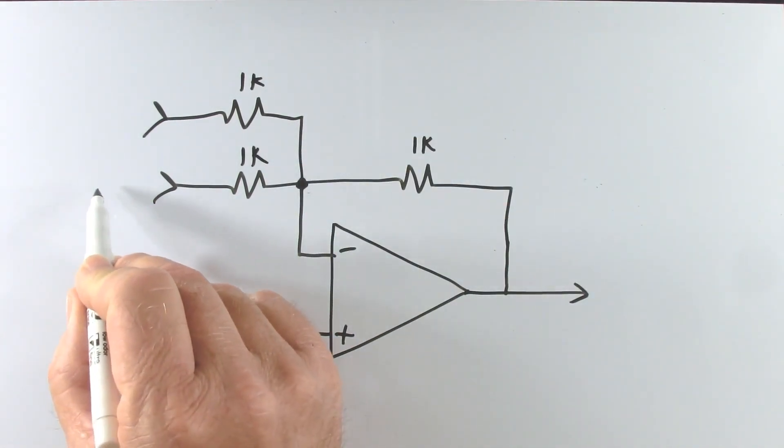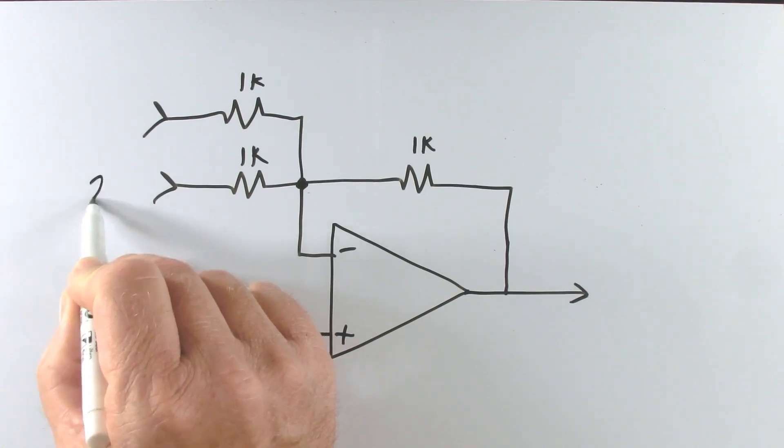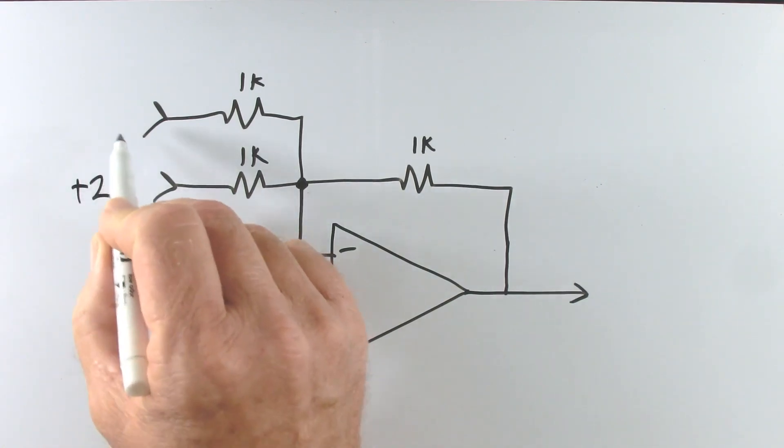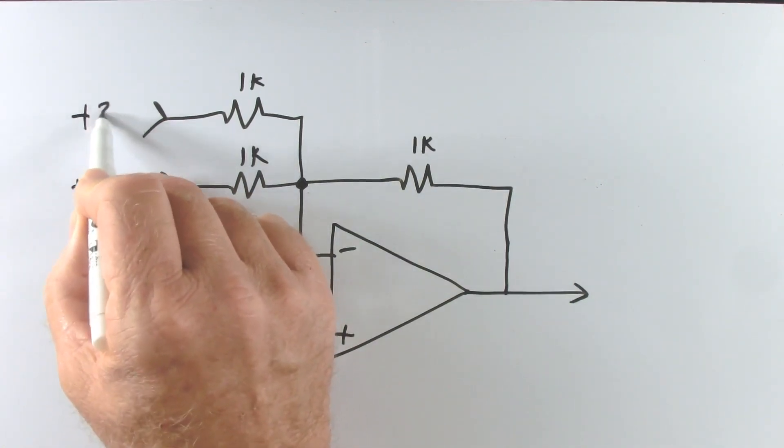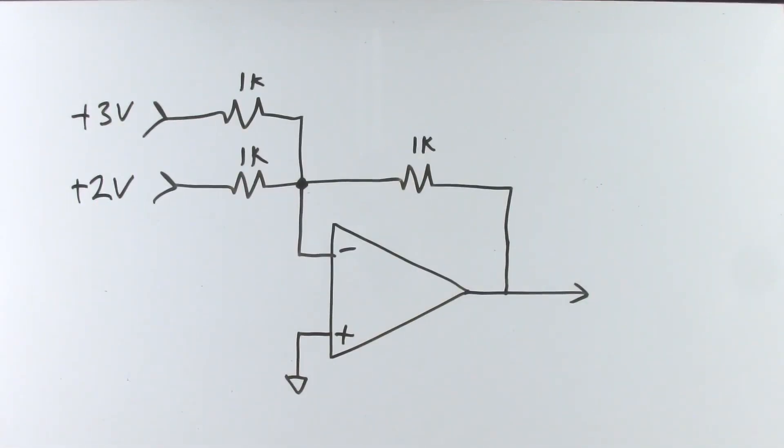So we'll start by putting in plus 2 volts and plus 3 volts. Let's see what the output is. Since this is a summing amplifier I would assume that the output is going to be 5 volts. Let's find out. Okay, we have the non-inverting input grounded so that's going to be 0 volts here and of course the output will be whatever it takes to make the other input also 0 volts.